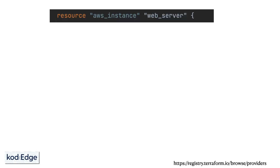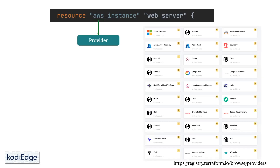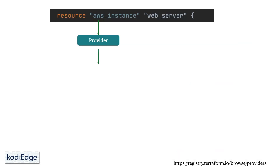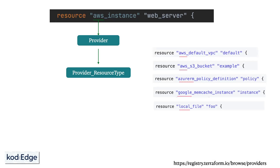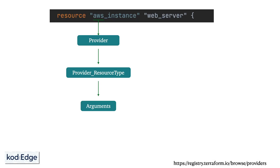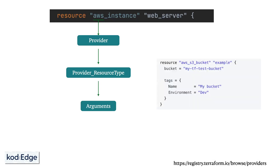Terraform relies on plugins called providers to interact with cloud providers and other APIs. There are many providers available — you can refer to the official Terraform documentation for a full list. Each provider has a set of resource types that Terraform can manage. Every resource type is implemented by a provider; without a provider, Terraform can't manage any kind of infrastructure. Each resource type has a number of required and optional arguments. For example, for creating an S3 bucket, 'bucket' is a required argument and 'tag' is an optional argument.